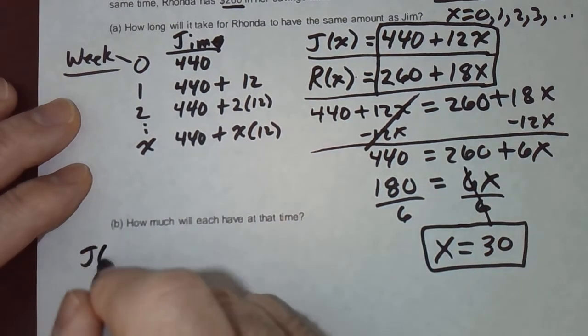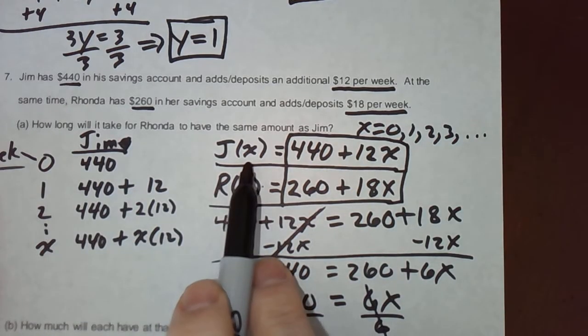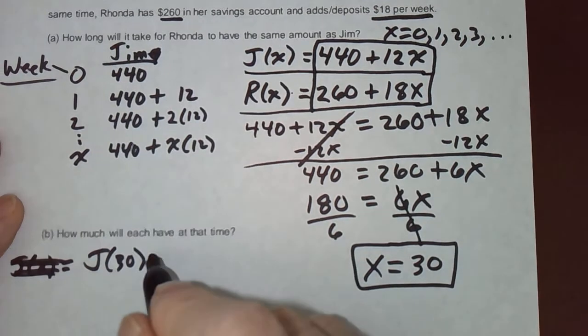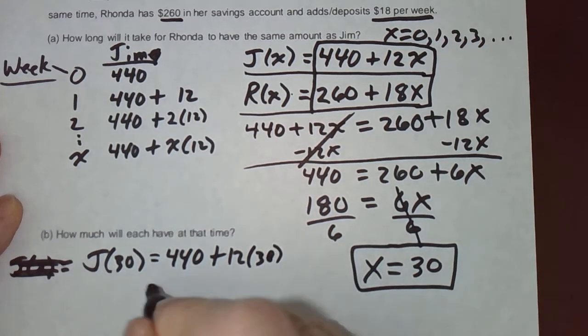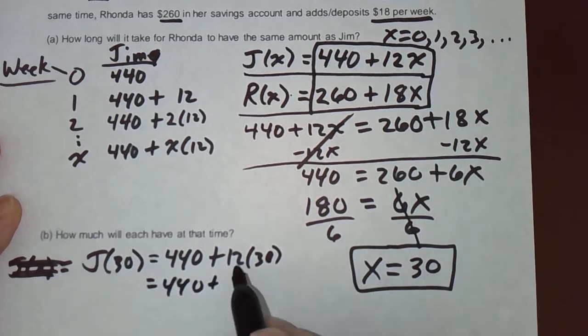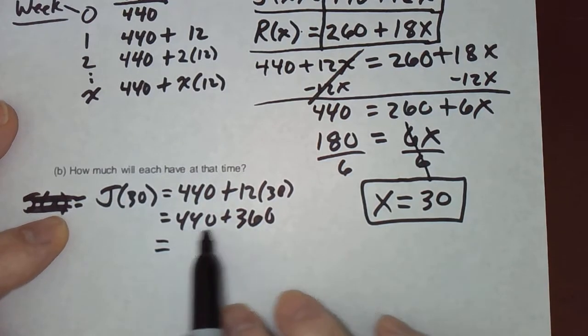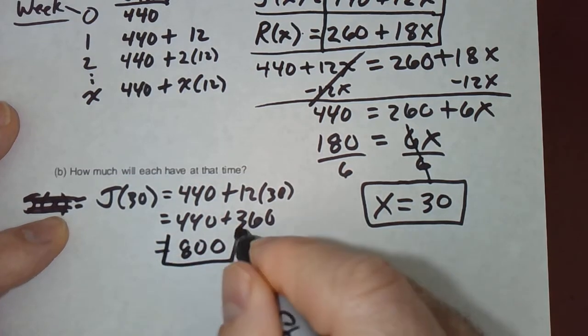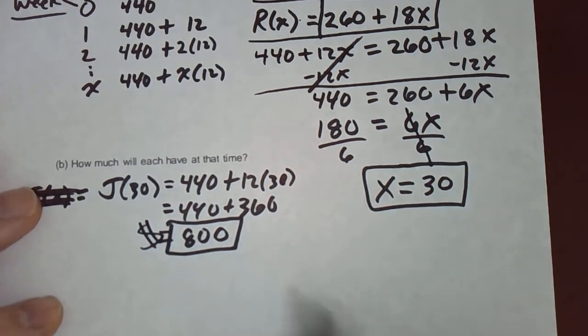J of X. Ooh. I don't need J of X. I need J of 30. Remember, this is the amount that Jim has in his account at week number X. We're choosing X equals 30. So J of 30 is 440 plus 12 times 30. That's 440 plus 12 times 3 is 36 with the 0. That's equal to, if you add those two numbers together, we would get 700, 800. That's 800 dollars. I don't know if I can make a tiny dollar sign. I'll put the dollar sign way out there. 800 dollars.